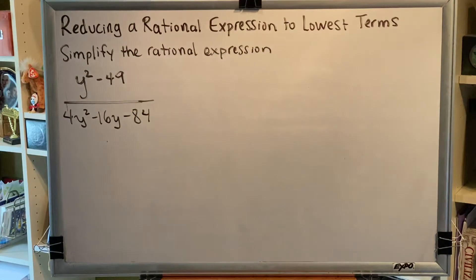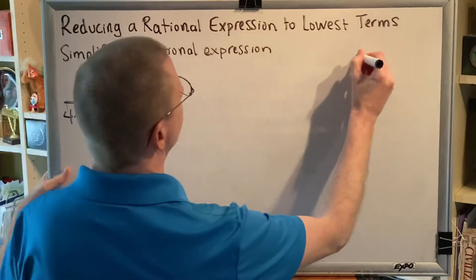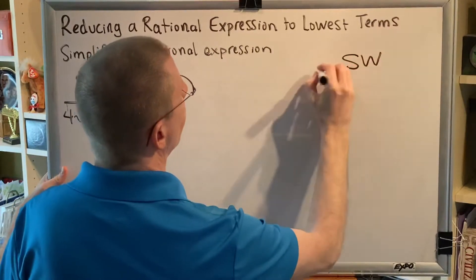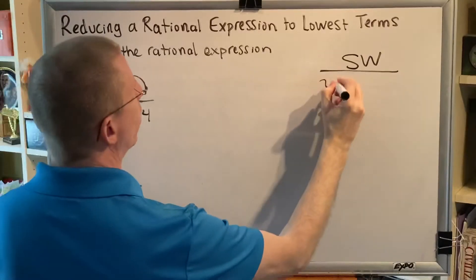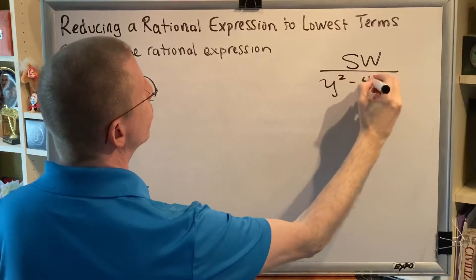Let's start with the factoring part of this problem. We're going to use our sidework space, SW for sidework, and we're going to start with our numerator polynomial, y squared minus 49.